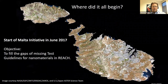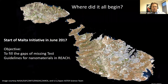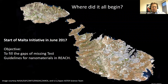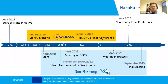It all started with the Malta Initiative in 2017. The objective was to fill the gaps of missing test guidelines for nanomaterials to fulfill the requirements for REACH registration. In 2017, we addressed the Commission — especially RTD — that it is necessary to get test guidelines in place for the REACH regulation, but not only for REACH, also for the EU definition for nanomaterials and other regulations like SFSAR and cosmetics.